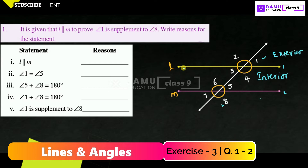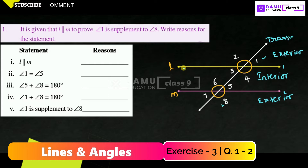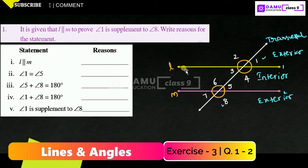If two corresponding exterior angles on the same side of the transversal are supplementary, then the two lines will be parallel. This line is the transversal — it intersects both the parallel lines. We can use the corresponding angles axiom here.